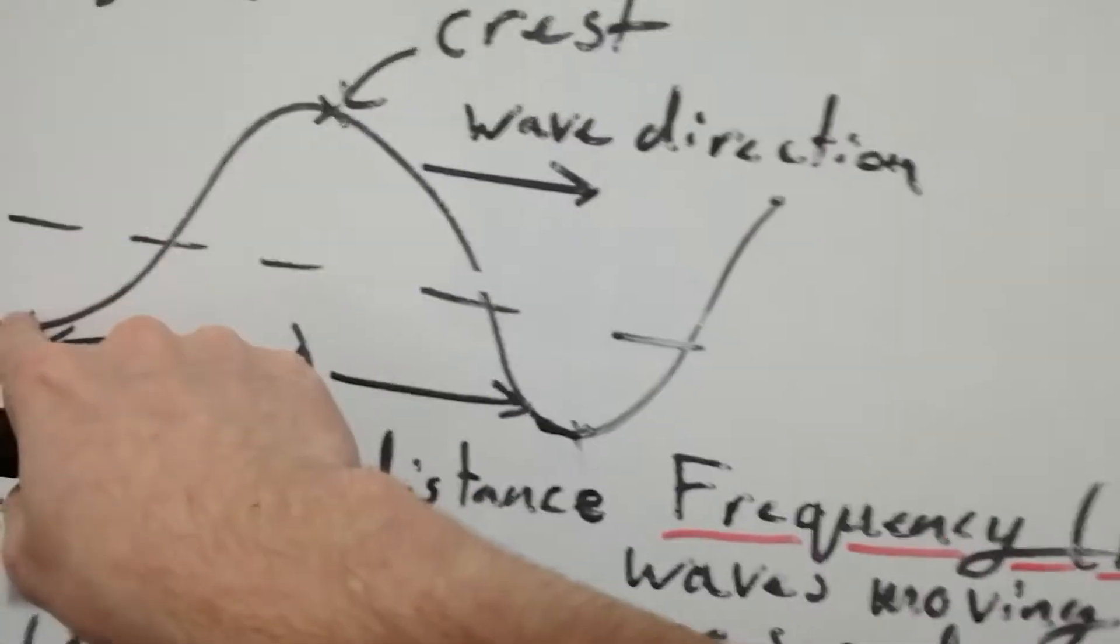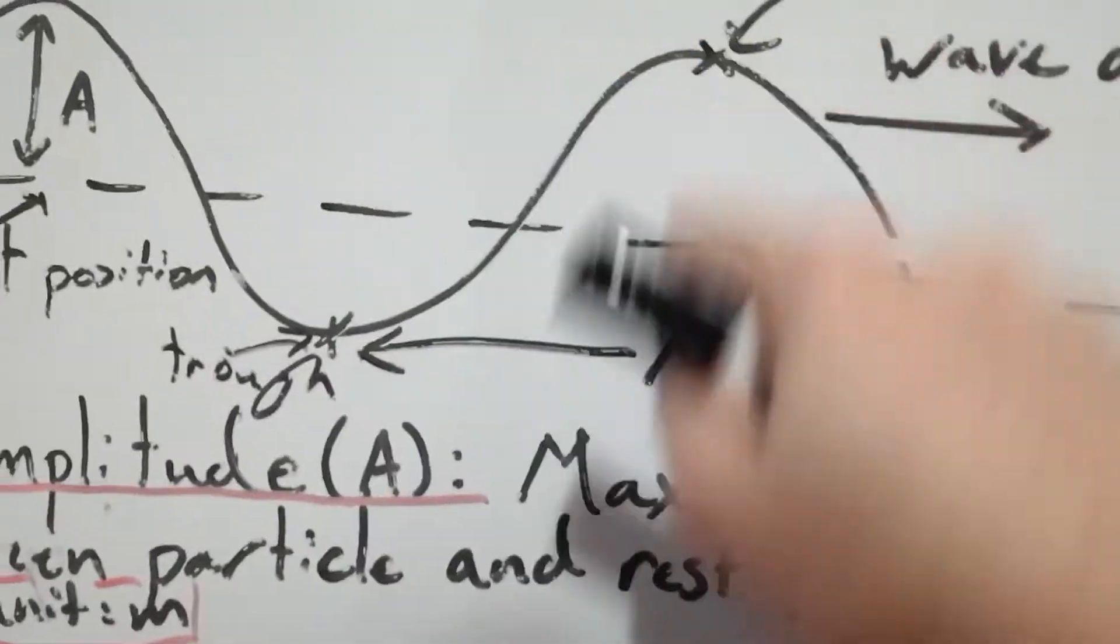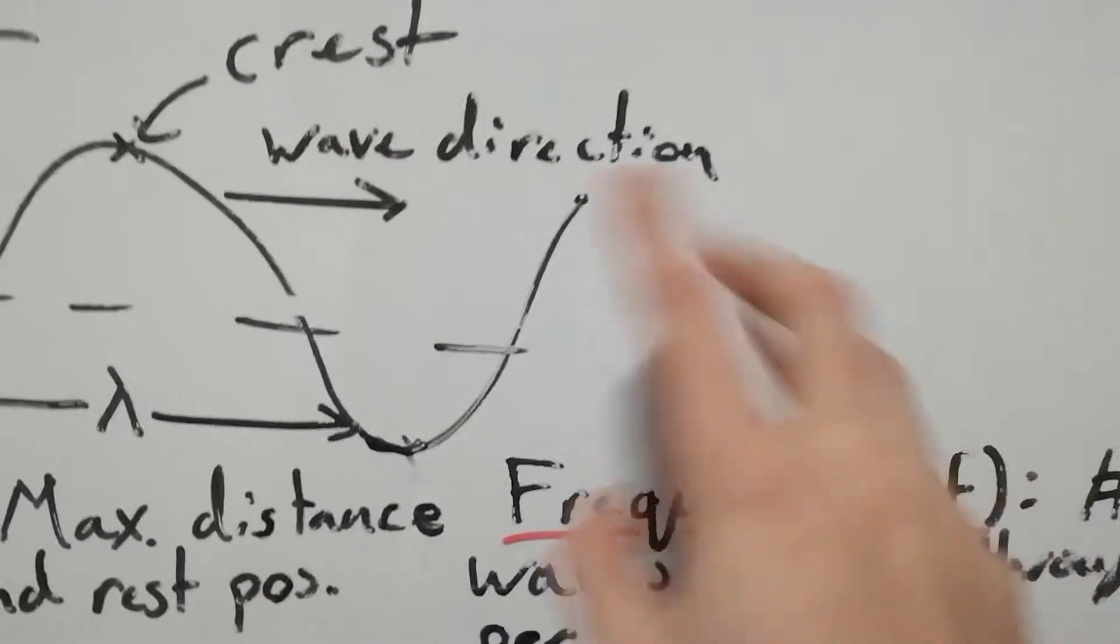From a trough to a trough within lambda, that is one wave depending on how we count it. How many of those move through that point per second gives us frequency, which is in Hertz.